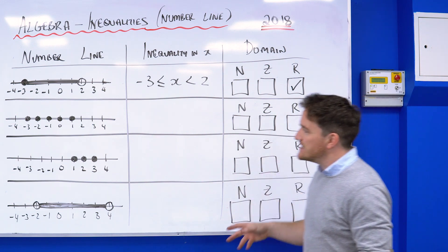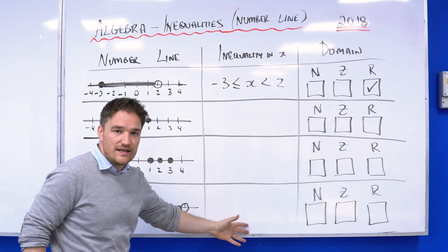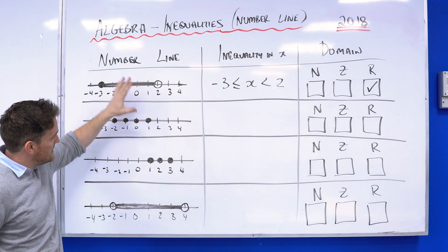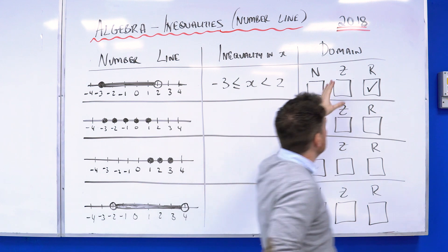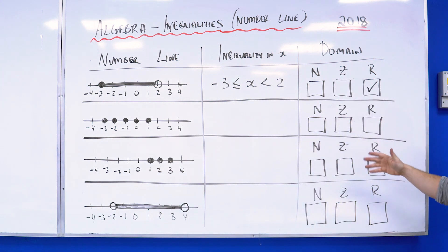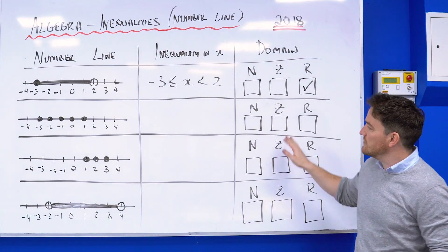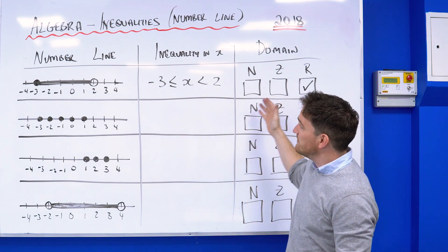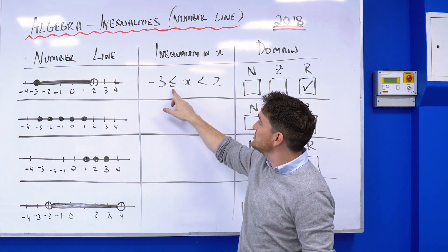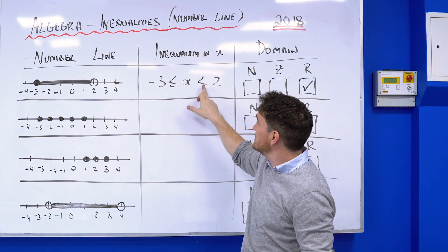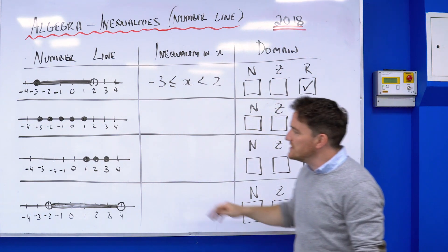They asked a great question about the number line and N, Z, R — you had to create an inequality. They gave you a number line setup and you had to figure out the inequality and say what domain it was: natural, integer, or real. In some of these you could give one or two answers and still be correct. The first one is done for you — they've put in a shaded dot and an unshaded circle. As I said, shaded means it has the equal-to sign, unshaded means it doesn't, and they've already ticked it as real.